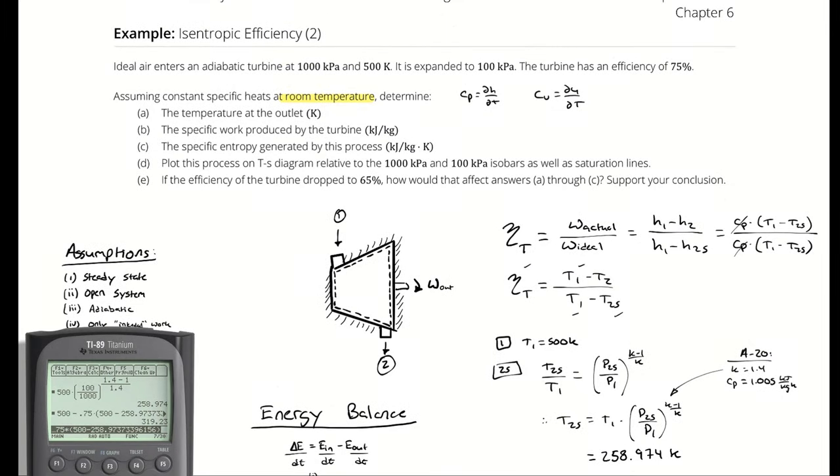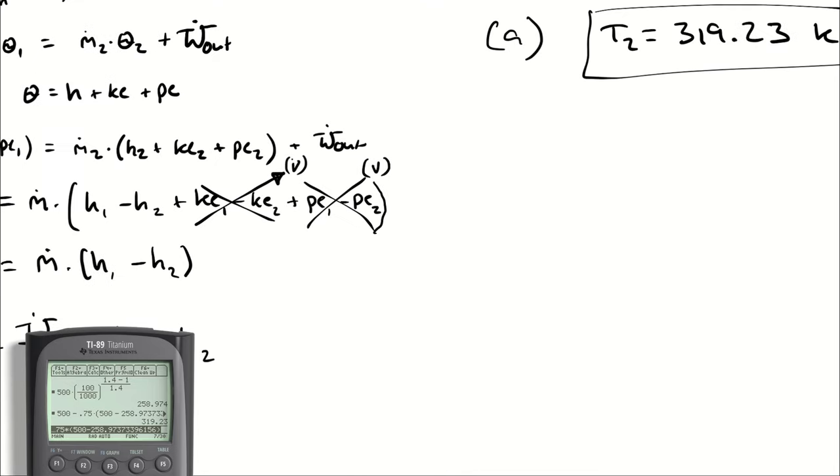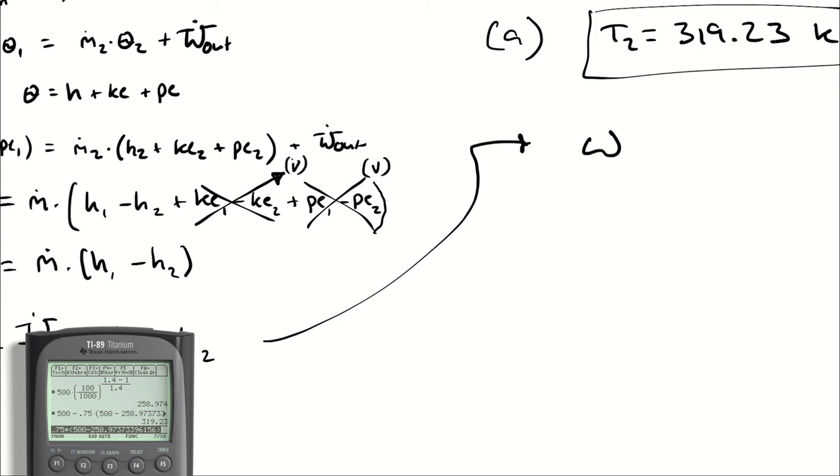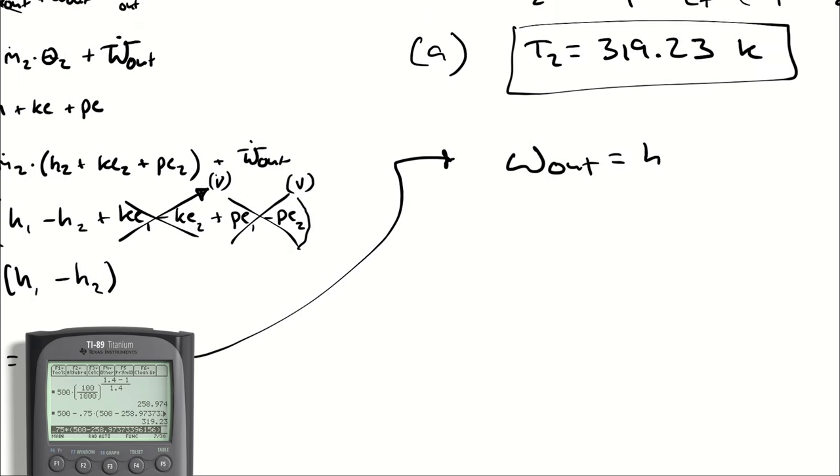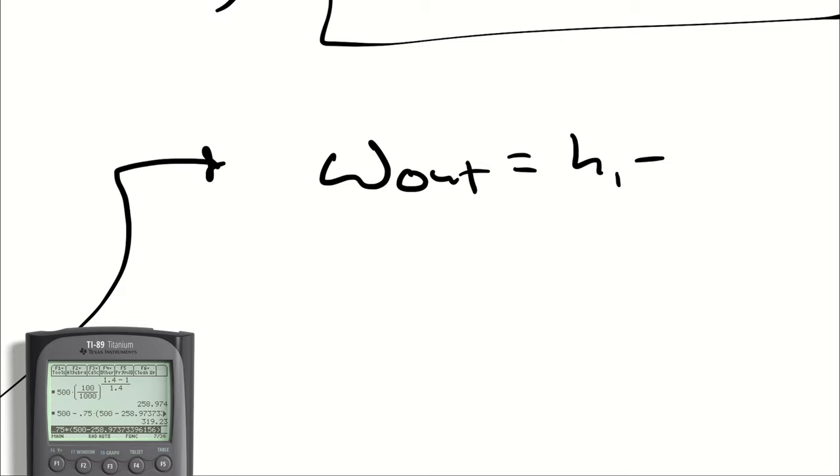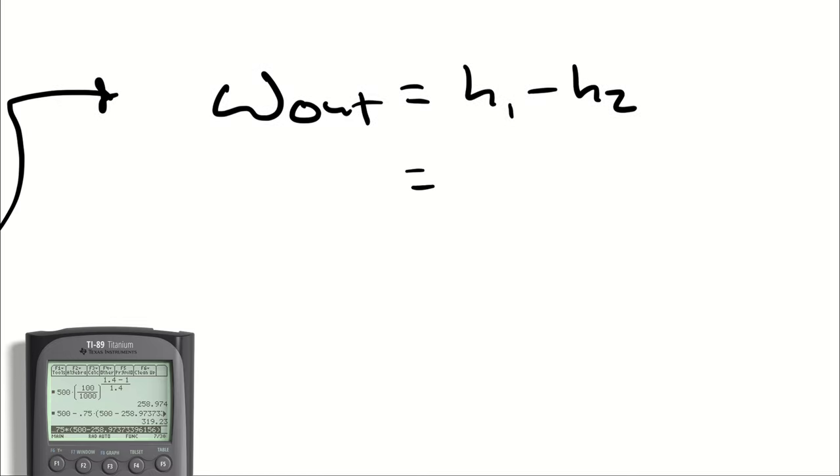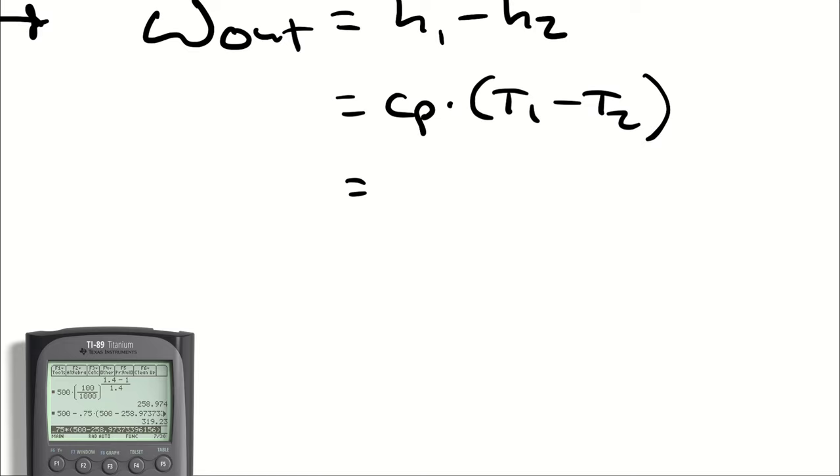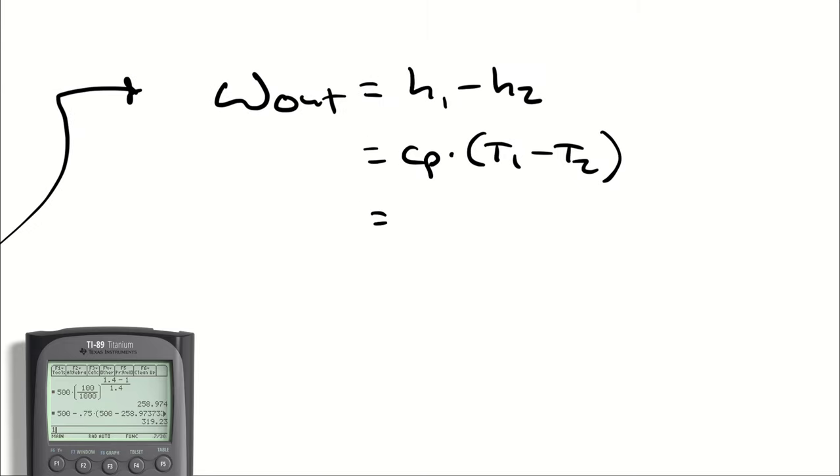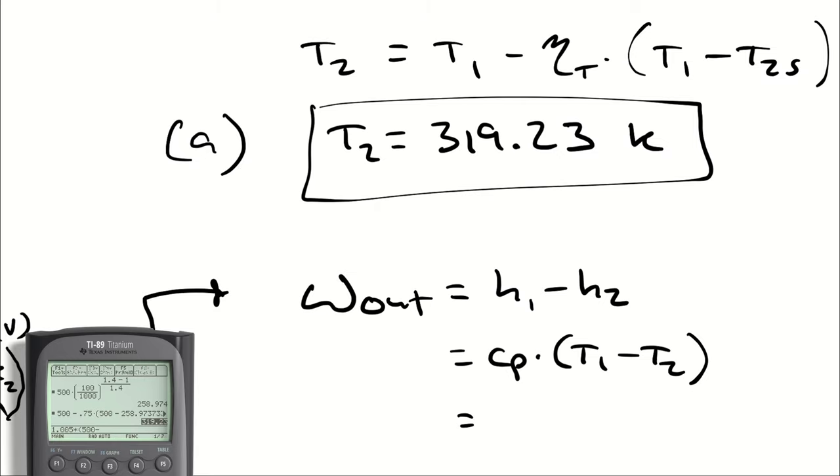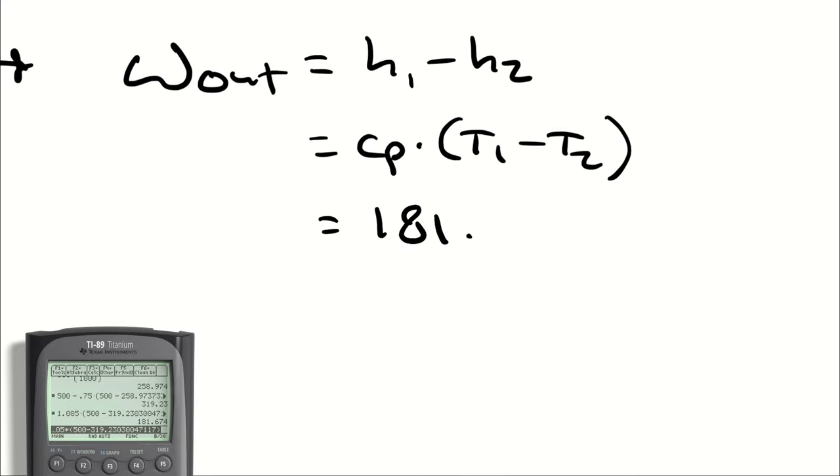For part B, I was asked what the specific work produced by the turbine is. Well, for that, I would normally take H1 minus H2, but because the problem told me to assume constant specific heats at room temperature, I'm using CP times T1 minus T2, and CP we looked up as 1.005. Then for T1, I'm using 500, and for T2, I'm using 319.23, because that's the actual temperature at my actual outlet. So that's 181.674 kilojoules per kilogram.